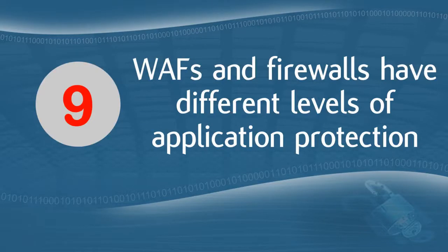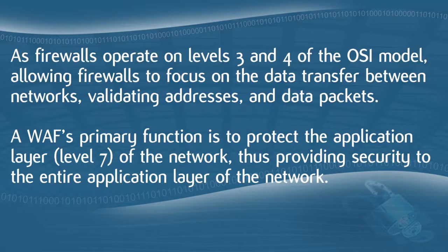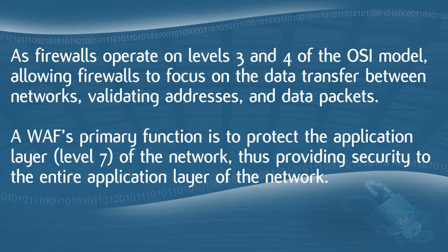The ninth difference is that WAFs and firewalls have different levels of application protection. Because firewalls operate on layers 3 and 4 of the OSI model, they offer minimal attention to the application level, instead focusing on validating addresses and data packets transferred between networks. WAFs, by contrast, have application layer protection as their primary function — layer 7 of the OSI model — providing security to the entire application layer, including application server software and interfaces with which the user has direct network access.